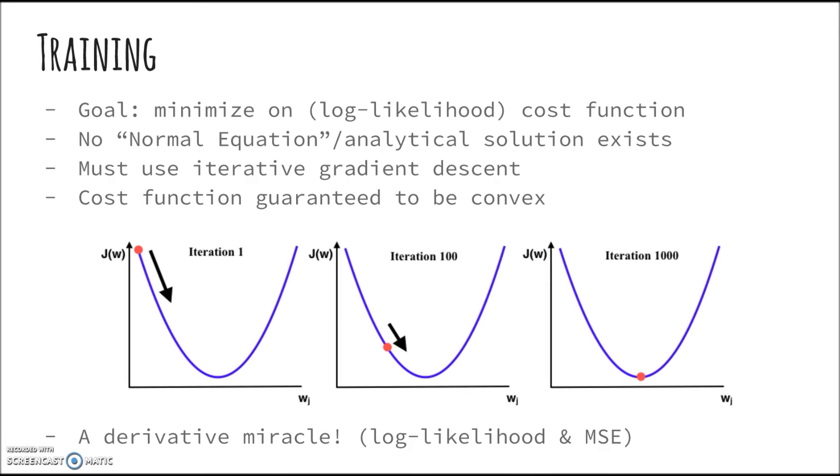Also, like linear regression, log-likelihood is a convex function, so we will always reach the global minimum point. However, unlike linear regression and MSE, no normal equation or analytical solution exists. Thus, we must use gradient descent and other iterative methods.